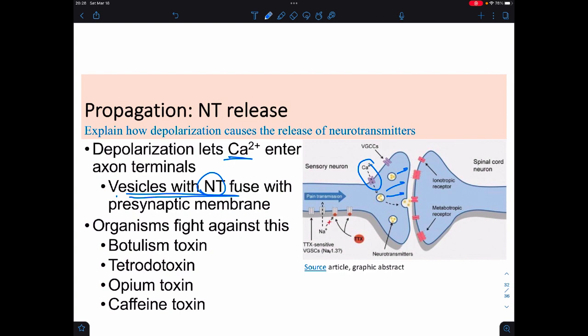It turns out that this is actually a place where many organisms fight back. So botulism toxin works to interfere with this neurotransmitter release. Tetrodotoxin serves as a manipulator, and it actually prevents the release of the neurotransmitters. Opium does the same thing, and caffeine actually serves to increase the secretion. And it actually hyperstimulates it, and usually hyperstimulation is bad too.